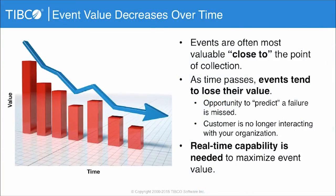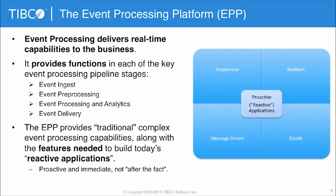When looking at the ROI of an event processing platform, one key concept is event value over time. Many events simply lose their value as time progresses, so I want to collect them as close to the source as possible. As time passes, I might miss the ability to predict a failure, or give a customer a cross-sell offer when they're no longer in my store. I need a system with the performance to process all these events close to the source — that's what the event processing platform provides, enabling real-time capabilities so I can take advantage of events as they're generated.